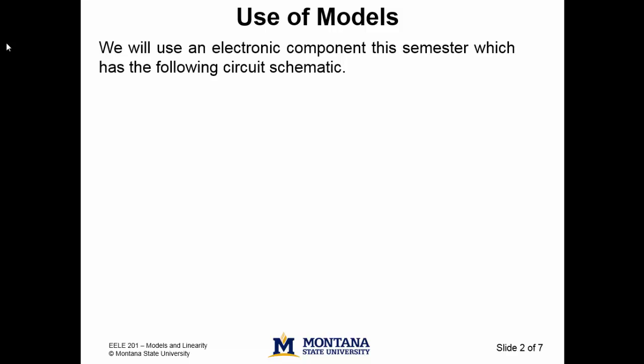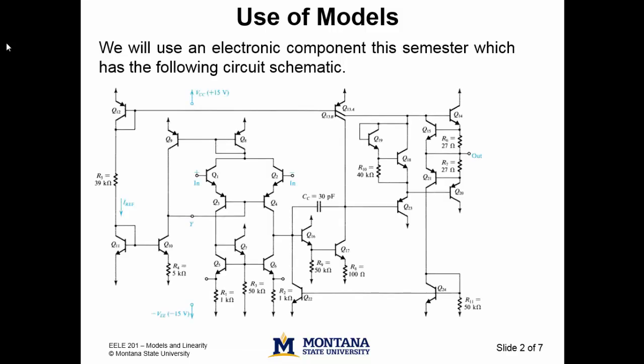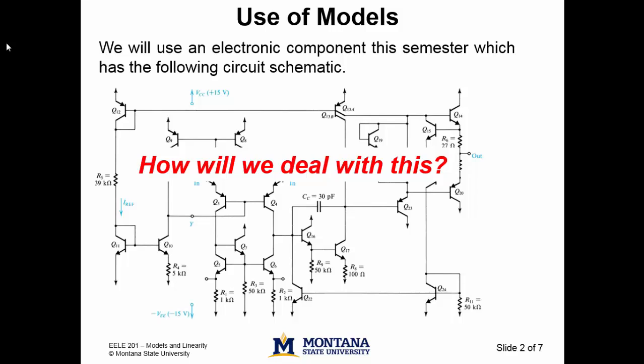In analyzing circuits and in building them in the lab, we will use a variety of circuit elements this semester. One, the operational amplifier, has a circuit schematic as follows. This one component has a circuit schematic consisting of more than 30 circuit elements. How on earth can we, just beginning to learn circuit analysis, understand this mess?